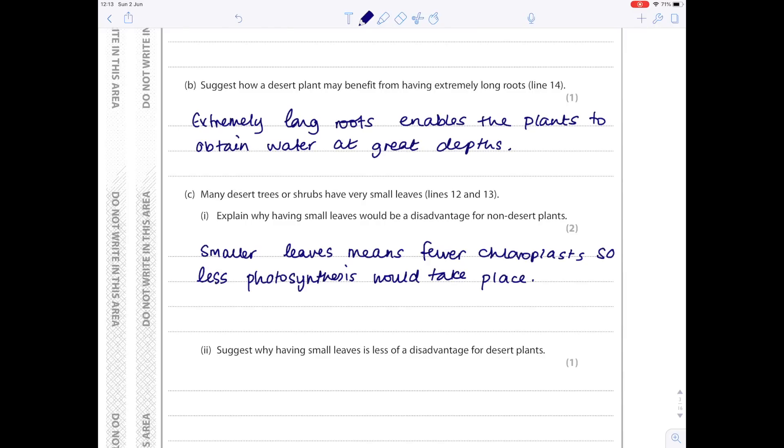Suggest why having small leaves is less of a disadvantage for desert plants. Well, we know this. It's both due to decreased water loss. And really, if you're in the desert, I assume that there's an awful lot of sunlight there anyway, so photosynthesis will be taking place quite efficiently.